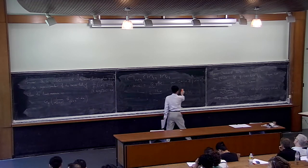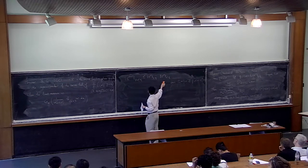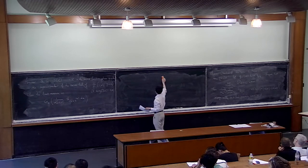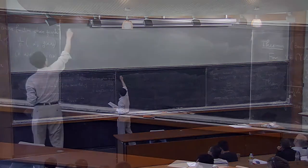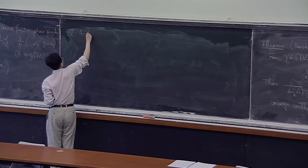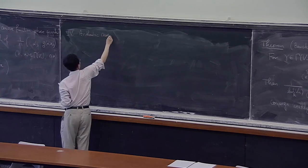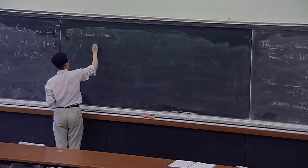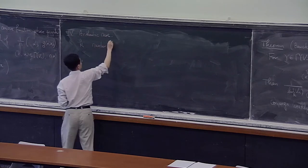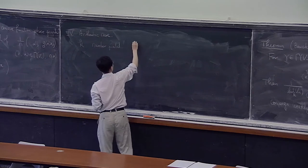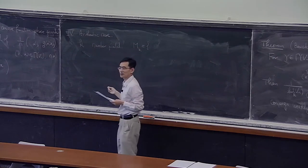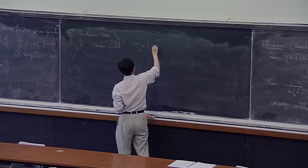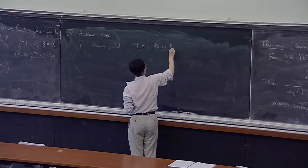Cela inclut le cas où la valeur absolue est triviale. La vraie raison est que dans le cas arithmétique, on va faire une projection sur le cas d'une valeur absolue triviale, ramenant la géométrie arithmétique à la géométrie sur une valeur triviale. C'est techniquement utile. Je passe maintenant au cas arithmétique.